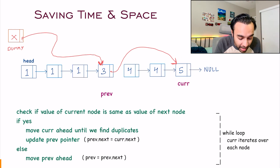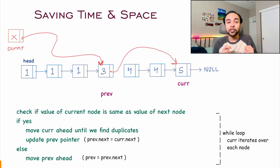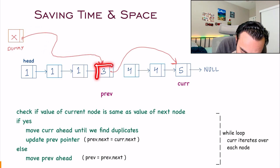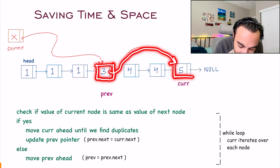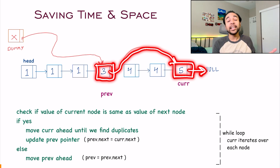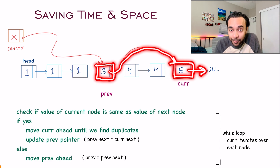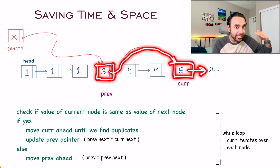So what just happened here? If you return dummy.next, you are actually returning this particular list which has node 3, then 5, and then null. So you have removed all the duplicates and you are returning only a list with these distinct elements. And if you notice, we did not take up any extra space and we did just one iteration of the entire list.